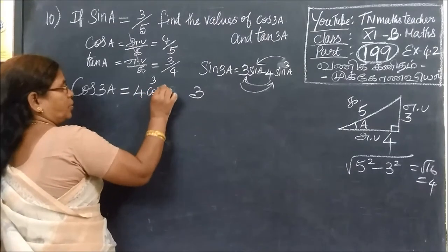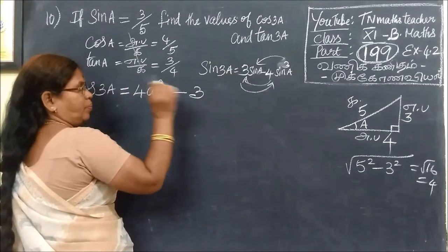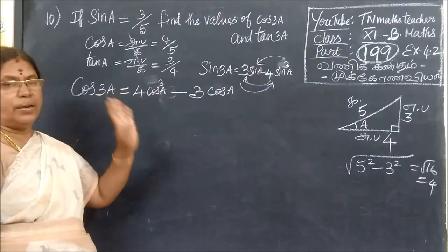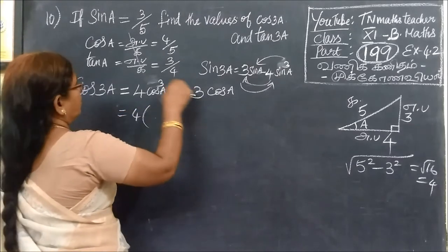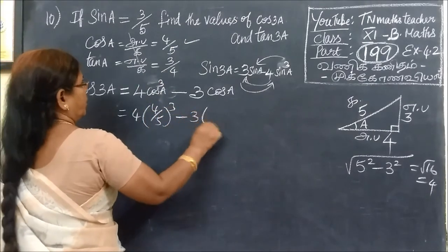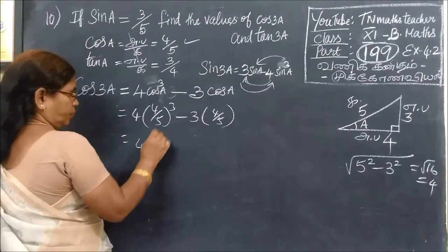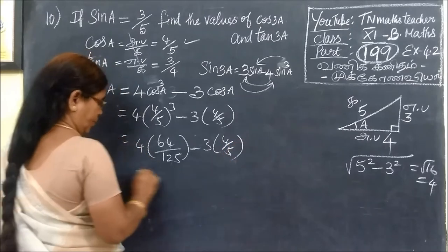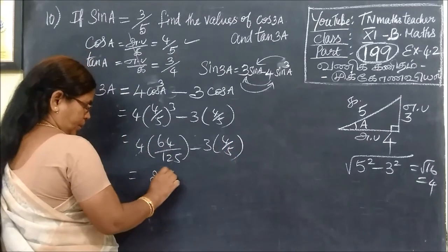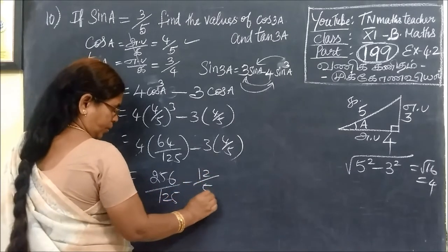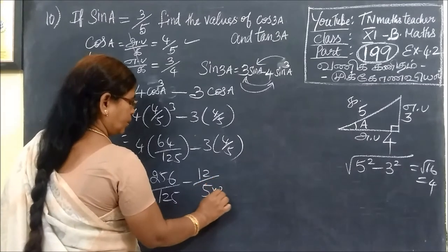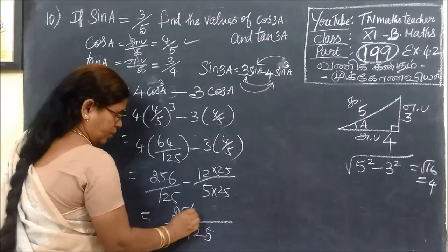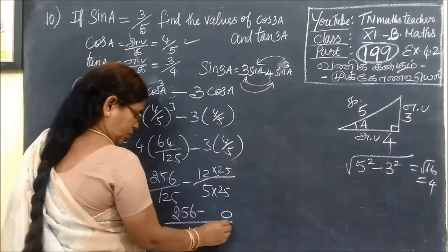So cos cube A. Now cos A — let's change the number as cos. So, 4 cos cube A minus 3 cos A. This is equal to 4. It is 4 by 5, then 4 by 5, equal to 64 by 125, then this is 3 bracket 4 by 5, equal to 256 by 125 minus 5. If you want to make it equal, then 25, then 25.